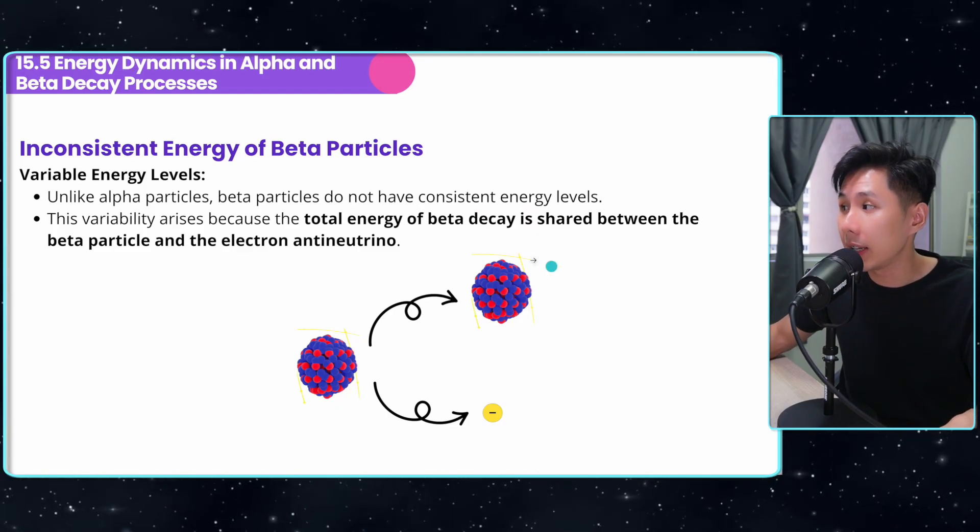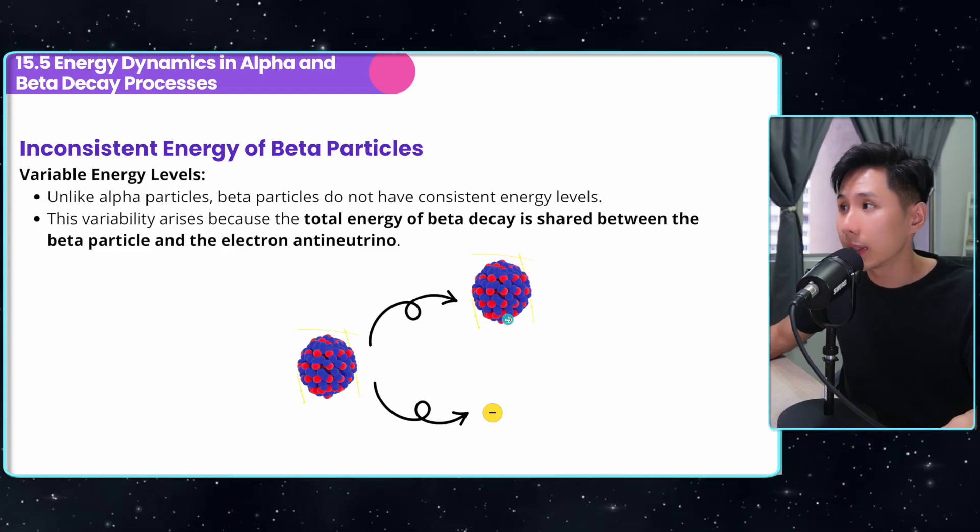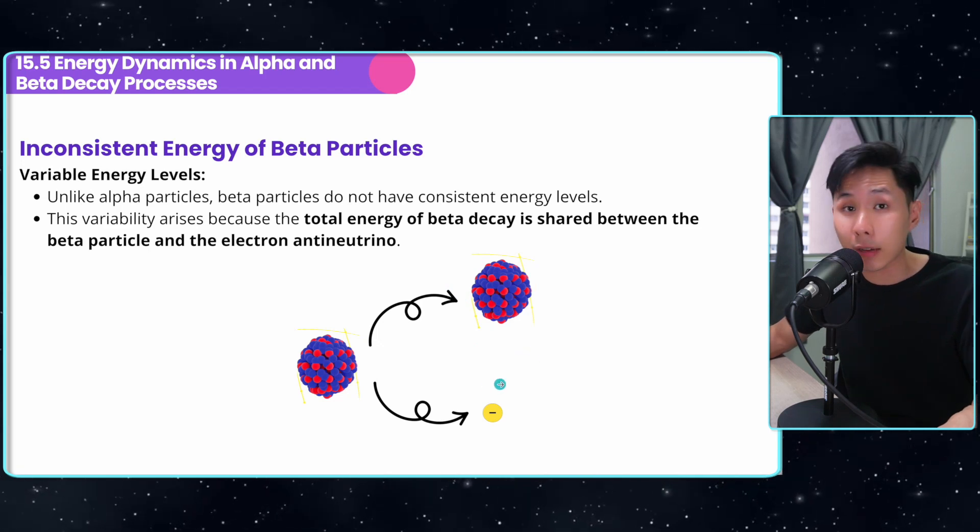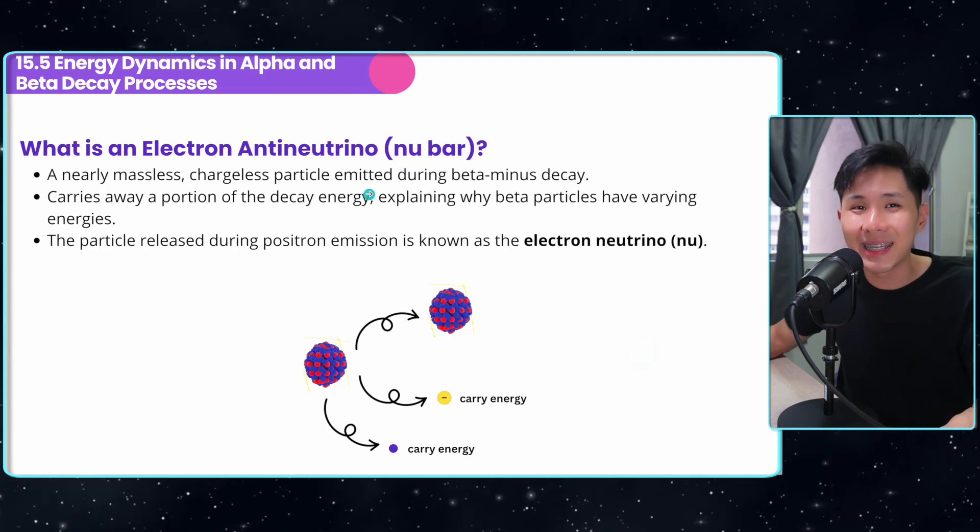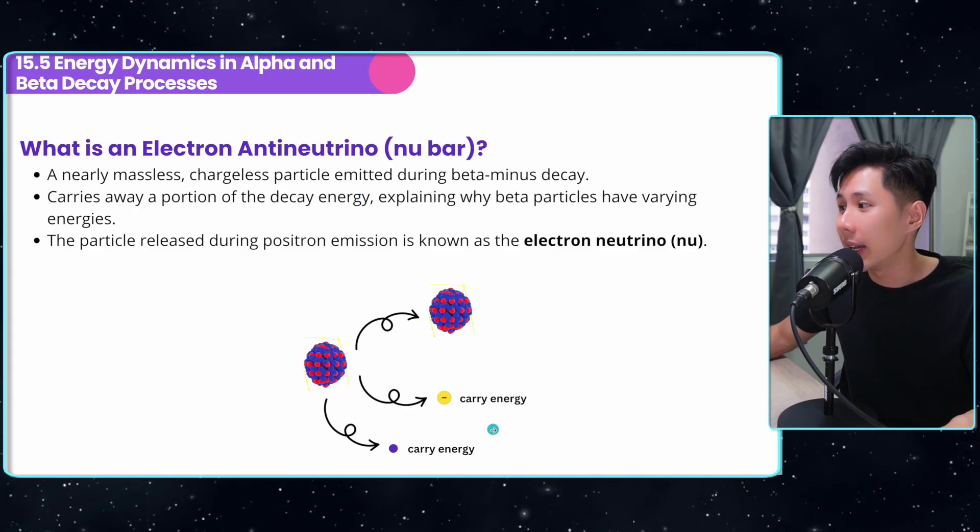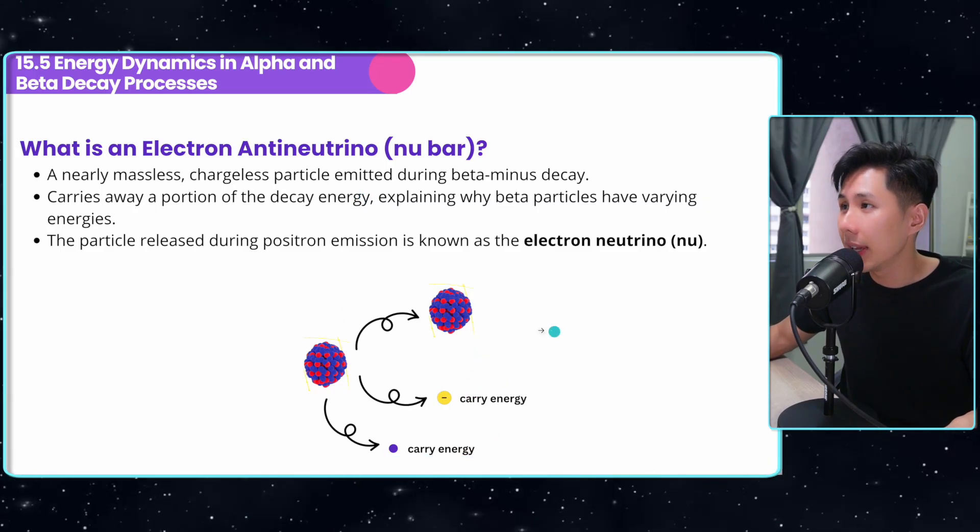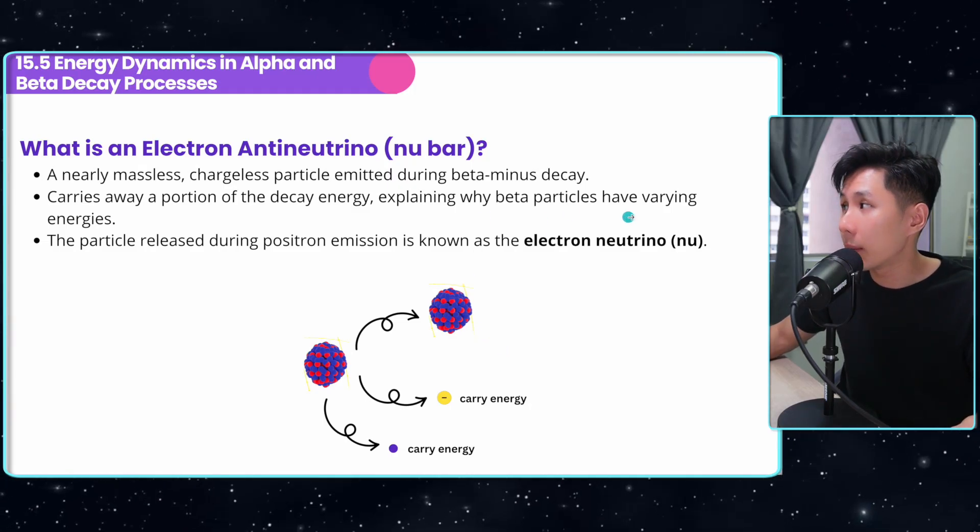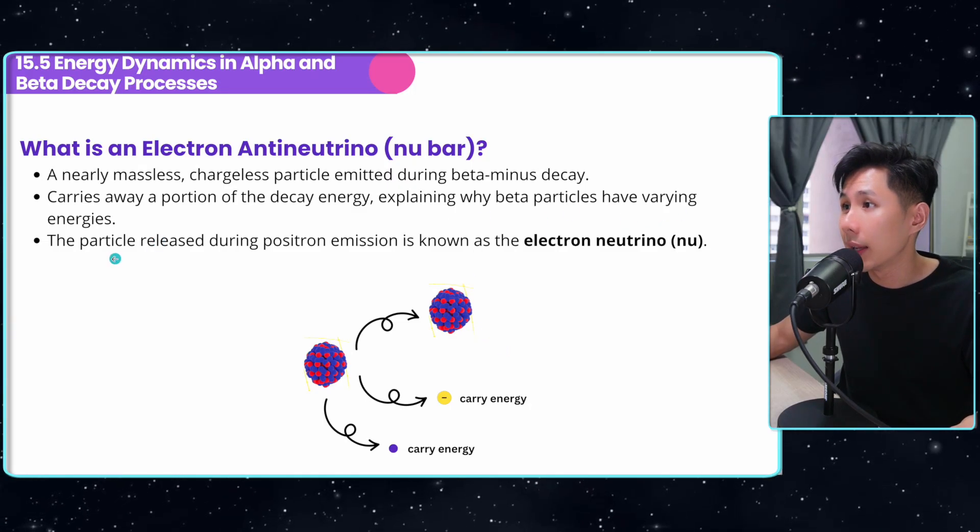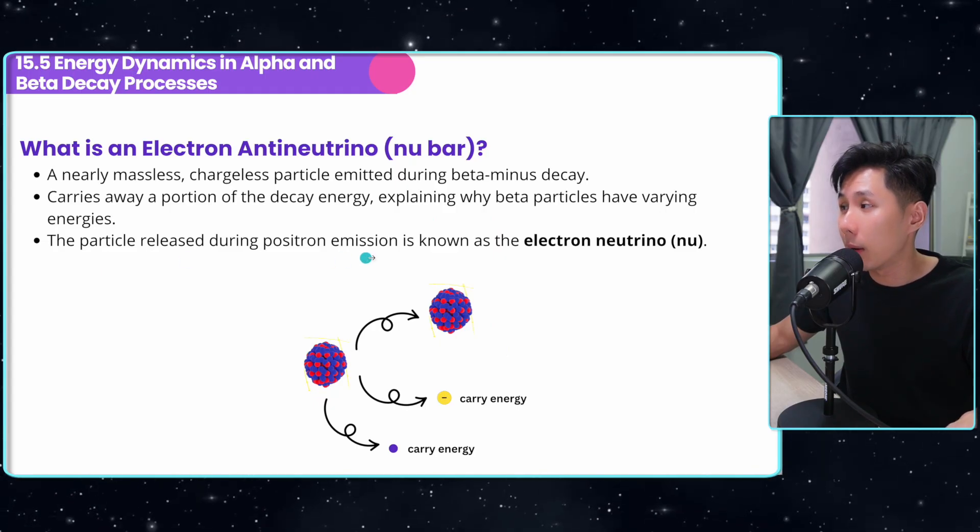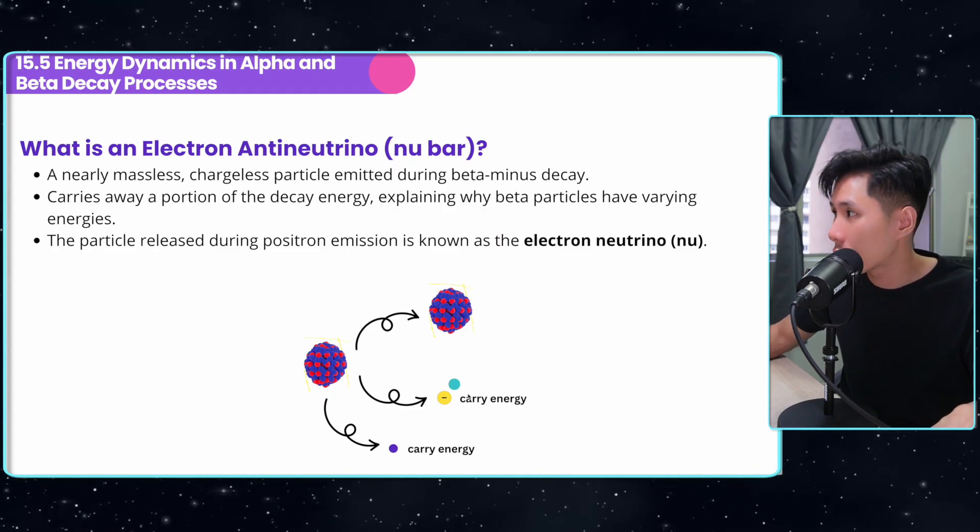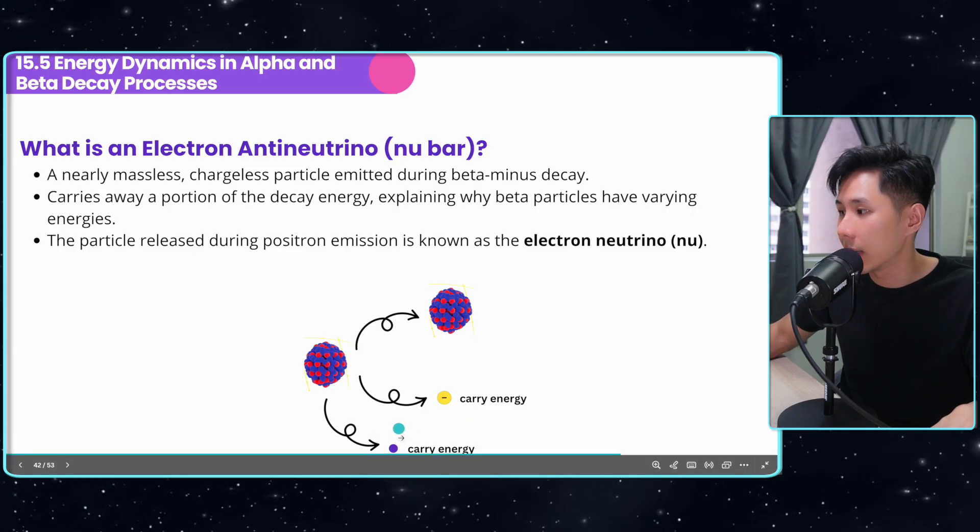Some of it also goes to the electron antineutrino. What is an electron antineutrino? It is a nearly massless, chargeless particle emitted. It carries away part of the energy, which explains why beta particles have varying energy. The particle released during positron emission is known as electron neutrino.